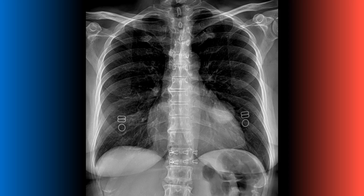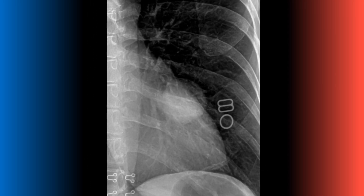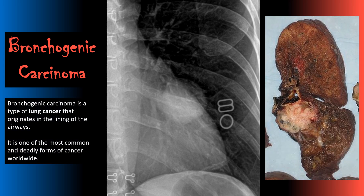Let's take a look at this frontal view of the chest. You should see an abnormality within the left lung field, and this is a good example of an aggressive appearing radiographic lesion. There's no obvious evidence of calcification and it appears very large — this ends up being a bronchogenic carcinoma. Bronchogenic carcinomas are one of the most common forms of lung cancer.